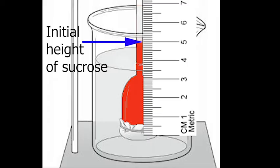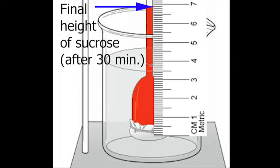Procedure. Use a metric ruler to measure the initial height of sucrose solution in the T-cell tube. Record your measurements. After 30 minutes, measure the height of sucrose solution in the T-cell tube again and record your measurement. Explain the difference in sucrose levels.